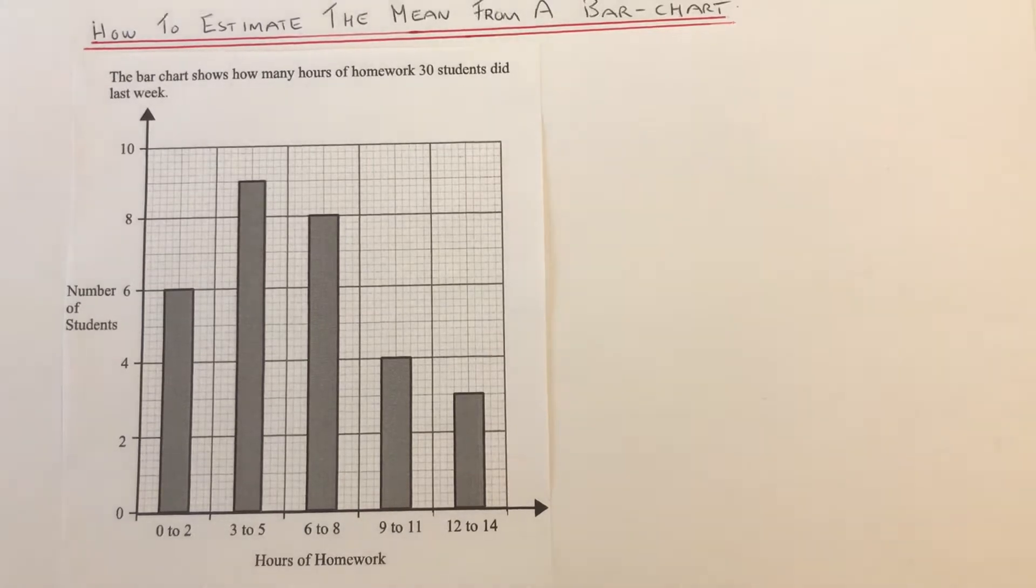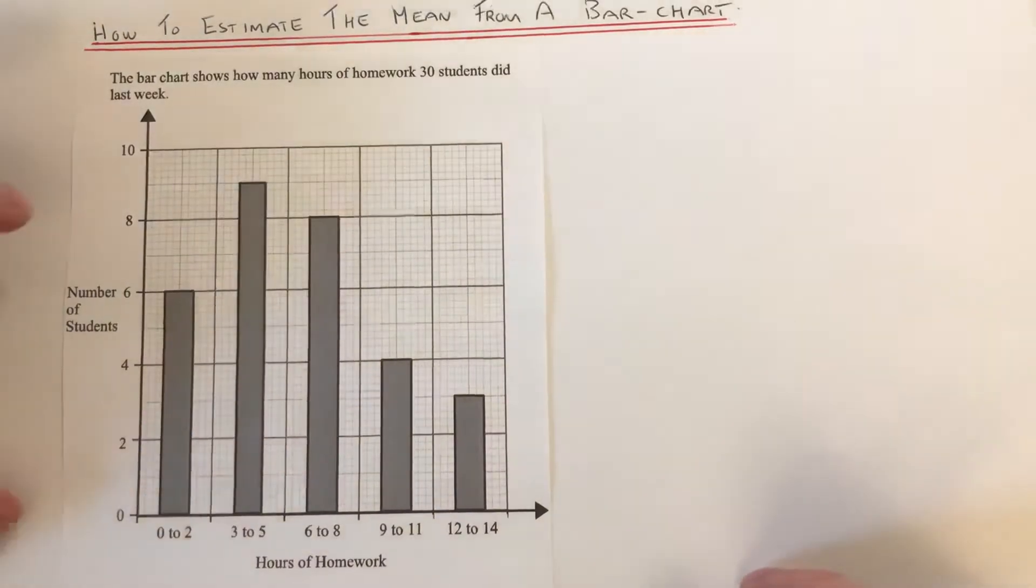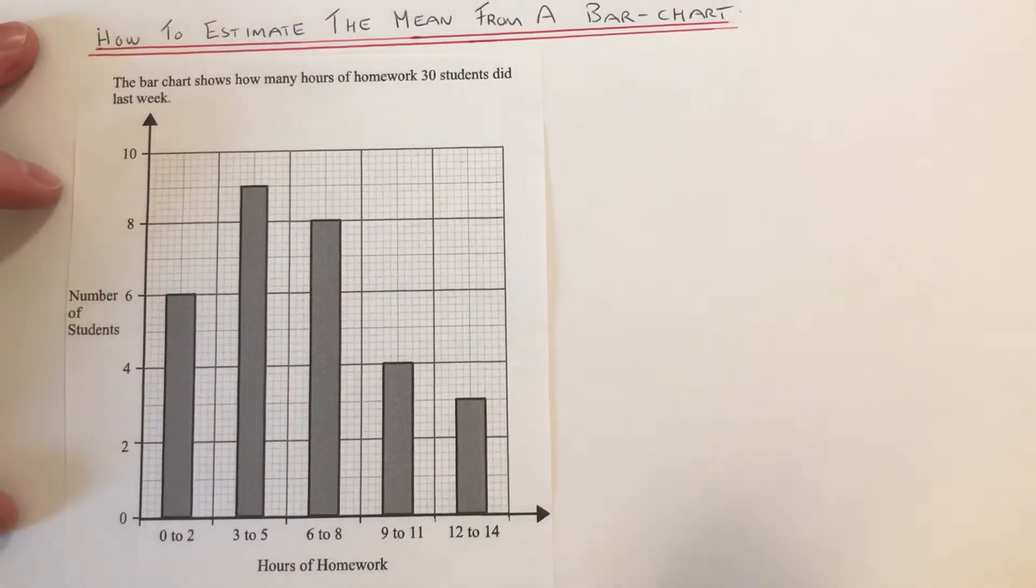This is a bit like working out the mean average from a grouped frequency table where you need to multiply the midpoints of each group by the frequency. So the first thing I want to do is work out how many people are in each bar.